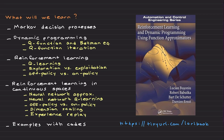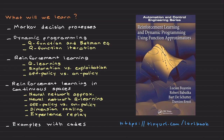Off-policy learning is about learning the best way even if you don't always do it. In the same throwing example, even when you throw with your left hand, you learn as if you had used your right hand — because that's the best way. Your brain keeps track of the best throw and updates knowledge about the right hand even when the left hand is used, because that's the throw you want to master.